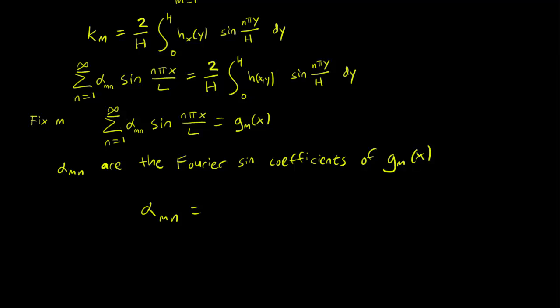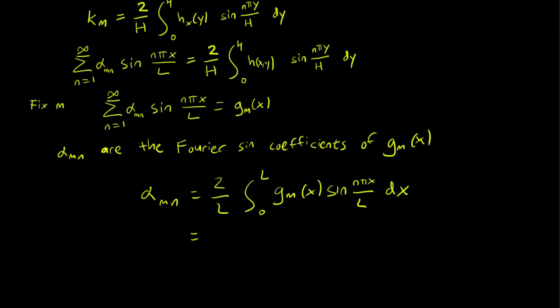So alpha_mn, the Fourier sine coefficients, is going to be 2 over L integral from 0 to L of g_m(x) sin(n pi x over L) dx. So all that's left to do is to replace the g_m(x) with the function it was originally.